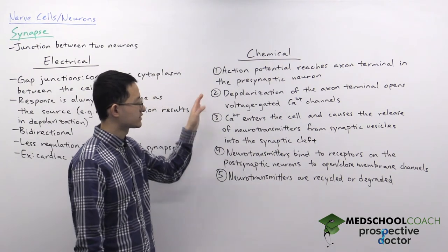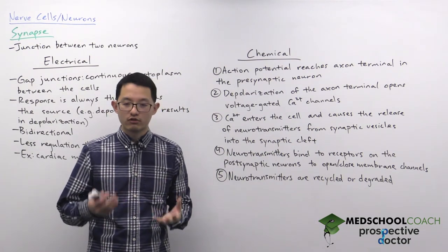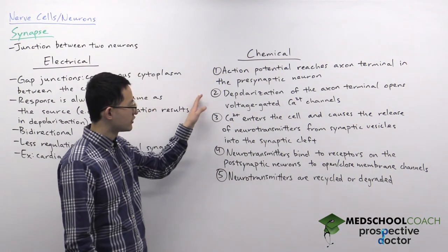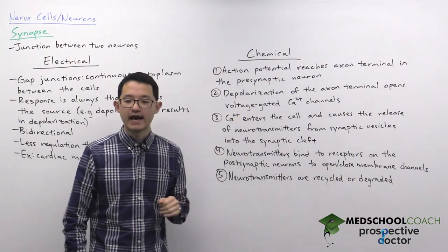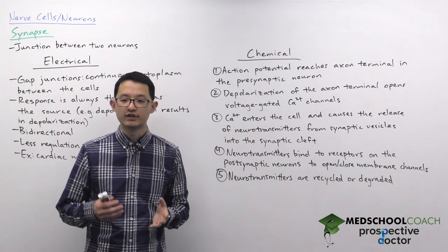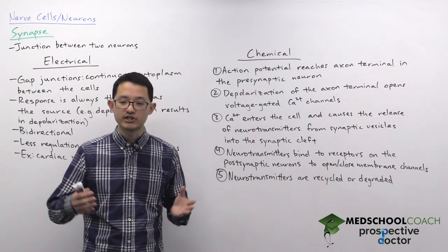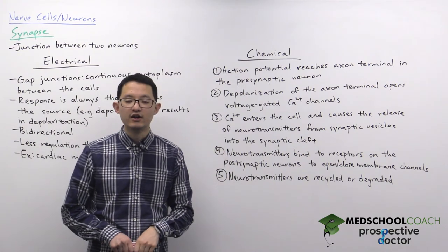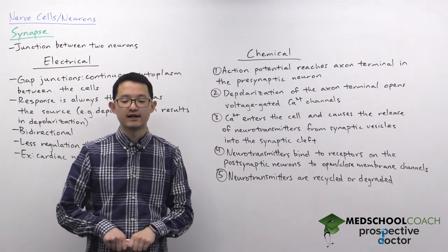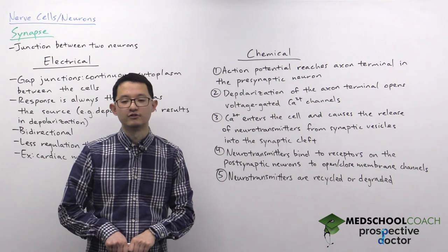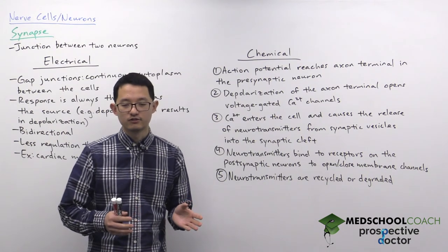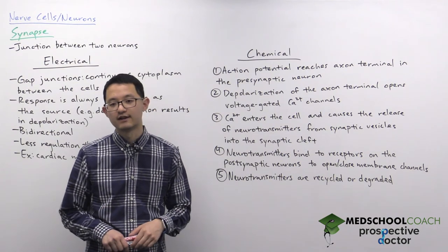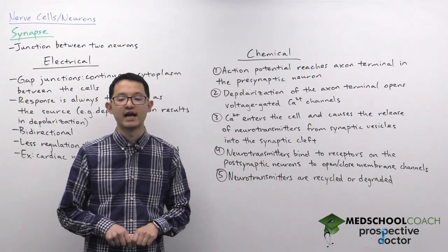When it reaches the axon terminal, the depolarization — the influx of positive charges — is going to open voltage-gated calcium channels, causing calcium to rush into the cell. The calcium, when it enters the cell, causes the release of synaptic vesicles, and when the synaptic vesicles are exocytosed, this causes the release of neurotransmitters into the synaptic cleft.